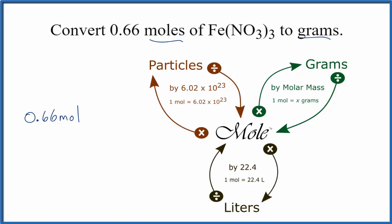When we have moles and we want to go from moles to grams, we're going to multiply by the molar mass. That gives us the grams. So we'll multiply our moles times the molar mass for Fe(NO3)3.